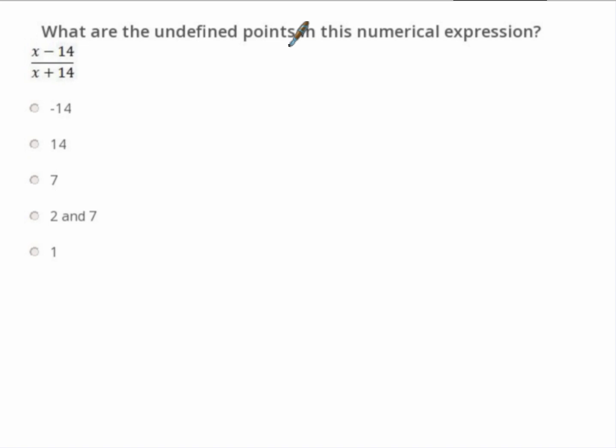What are the undefined points in this numerical expression? So the top part here again we're going to ignore and what we want to do is set this bottom part or the denominator x plus 14 equal to zero. So hopefully you can think it through and hopefully you realize well if it were a negative 14, negative 14 plus 14 equals zero right and therefore that is our answer. But let's say you can't see it, you know you can't solve it so quickly.